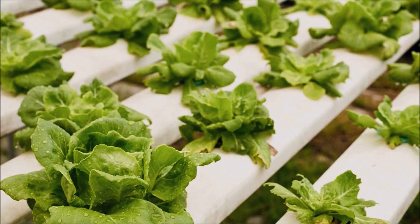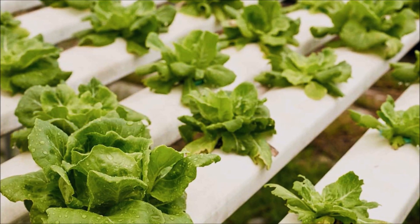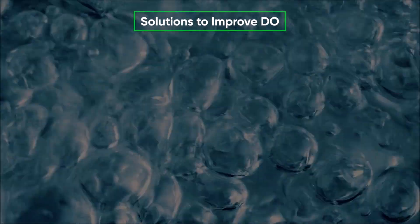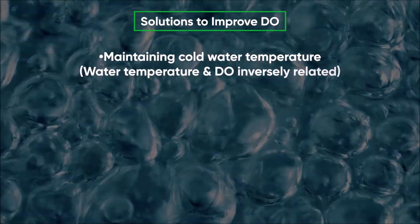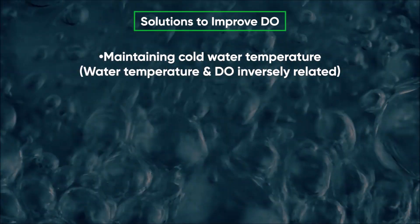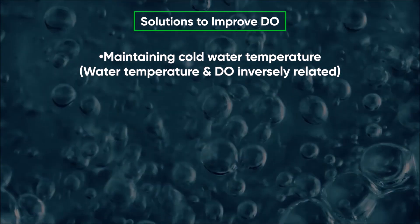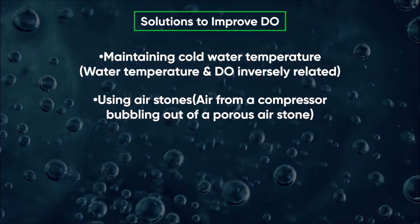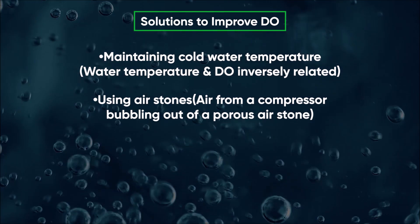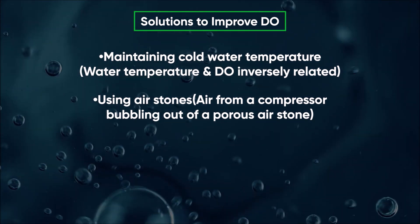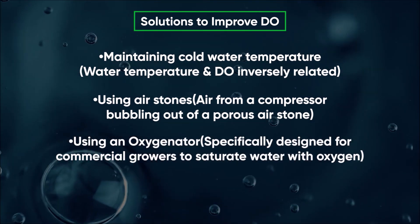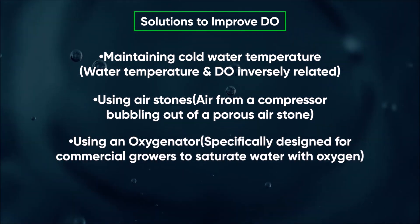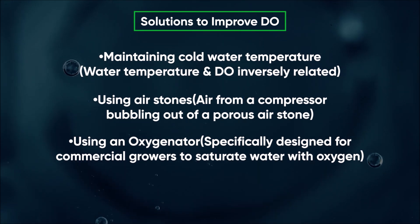A general rule is to maintain 6 PPM or higher. Solutions to improve dissolved oxygen include maintaining cold water temperature — water temperature and DO are inversely related — using air stones, where air from a compressor bubbles out of a porous air stone, and using an oxygenator, which is specifically designed for commercial growers to saturate water with oxygen.